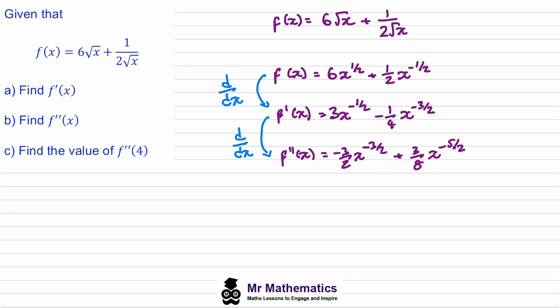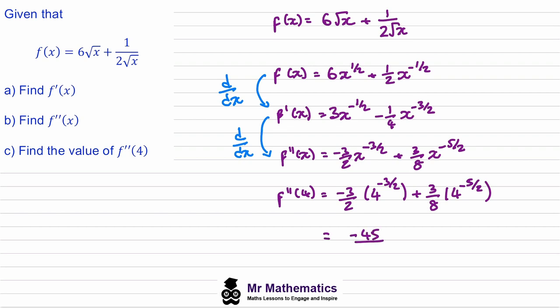For part c we've been asked to find the value of f''(4), so we substitute x equals 4 into our expression. We work this out on our calculators and we get minus 45 over 256.